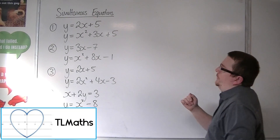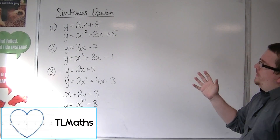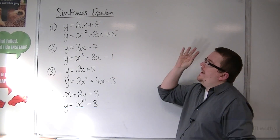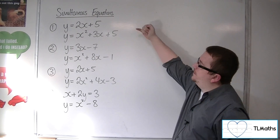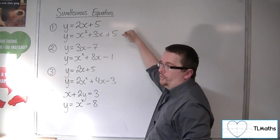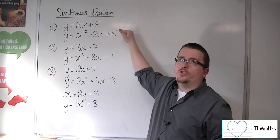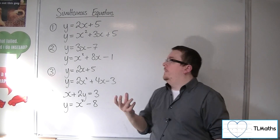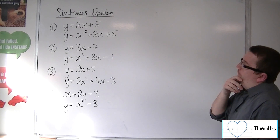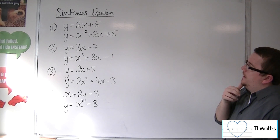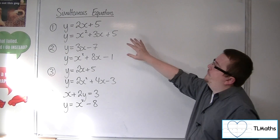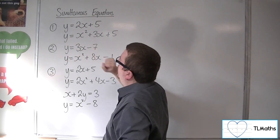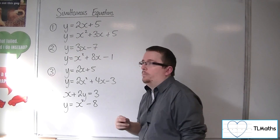We're going to look at some simultaneous equations where we have a linear equation and a quadratic equation, and we're going to solve these to find x and y. So if we look at the first one: y equals 2x plus 5, and y equals x squared plus 3x plus 5.